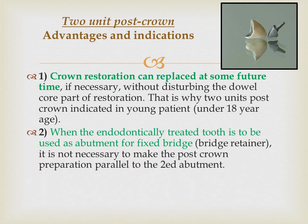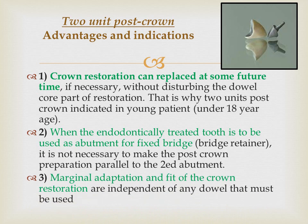Another indication for the two-unit post crown is when an endodontically treated tooth is to be used as an abutment for a fixed bridge. In this case, the post crown preparation does not need to be parallel to the second abutment.